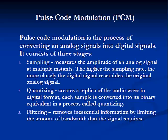Pulse code modulation consists of three stages. First, sampling — the process that measures the amplitude of an analog signal at multiple instances. The higher the sampling rate, the more closely the digital signal resembles the original analog signal.